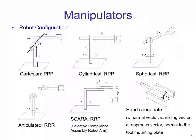For cylindrical robots, we have an RPP configuration, which stands for one revolute joint — this joint is turning around — and two prismatic joints. Both the second and third links are moving in a translational way. The third configuration is a spherical robot, which has two revolute joints and one prismatic joint. The first is revolute, the second is also rotational, and we have a translational movement for the third link — so it's a prismatic joint describing a sphere. Same happens with the cylindrical robot RPP, which describes a cylinder.